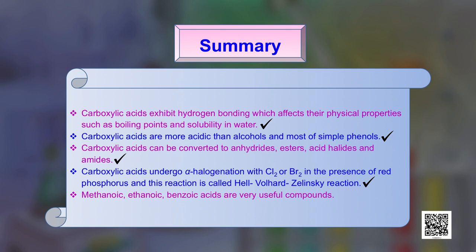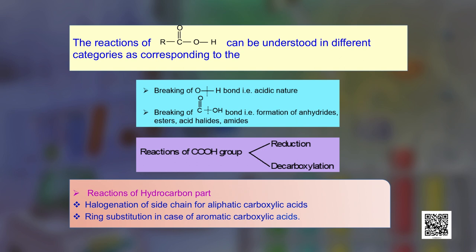Carboxylic acids can be converted to anhydrides, esters, acid halides, and amides. They also undergo alpha-halogenation with chlorine or bromine in the presence of red phosphorus — the Hell-Volhard-Zelinsky reaction. Methanoic, ethanoic, and benzoic acids are very useful compounds. We classified different reactions in terms of cleavage at O-H bond, C-O bond, reactions at the aromatic ring or alkyl side chain, and reduction and decarboxylation of the carboxylic acid group. Thank you for being with us.